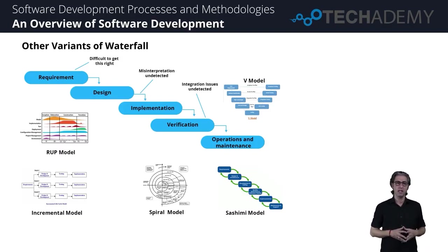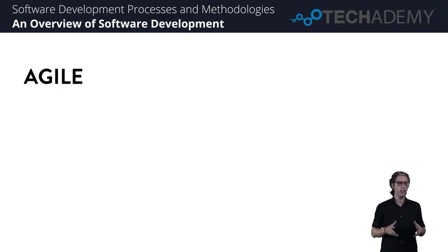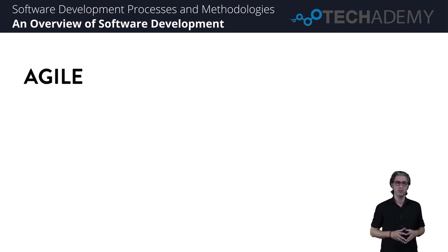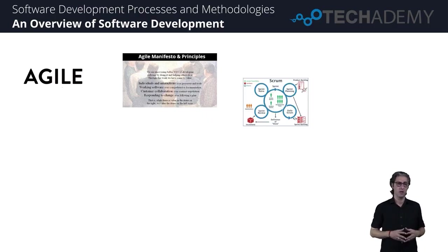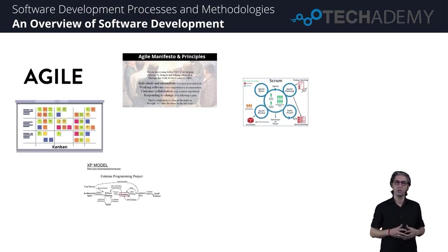As all these versions came along, there was another thought process emerging in the software industry called Agile. Agile really isn't a model — it's basically a philosophy or a mindset. A lot of top software industry leaders who developed software quite successfully came together and articulated what we now call the Agile manifesto and principles. As this manifesto and principles were developed, there were models such as Scrum, Kanban, and XP which helped to promote this mindset.